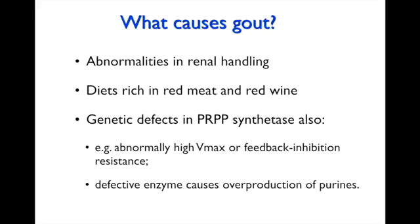Different things can cause gout: abnormalities in renal handling — if there's something wrong with the excretion of uric acid — or eating a very rich diet. Gout was common historically when people feasted on meat and wine; it was a disease of the rich because the poor couldn't afford such food. Genetic defects can also cause gout — for example, if PRPP synthetase, which activates ribose and drives the synthesis of purines and pyrimidines, is overactive, it leads to excess purine production, breakdown, and uric acid generation.